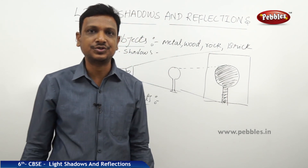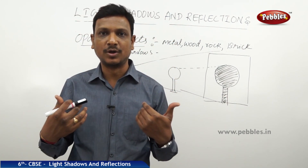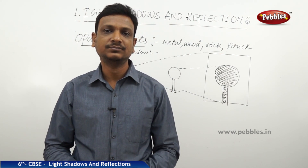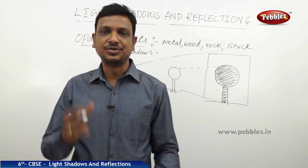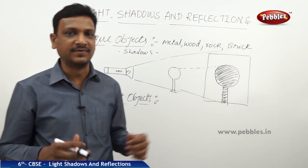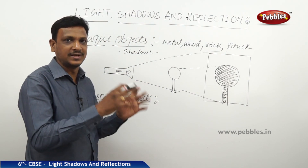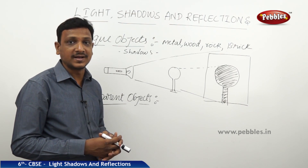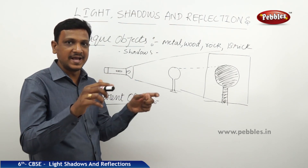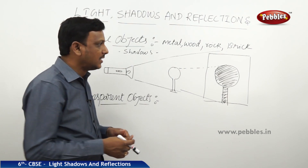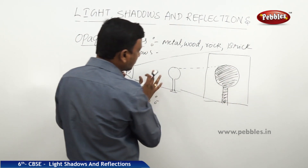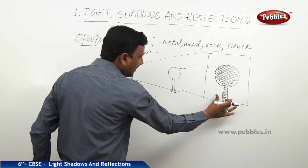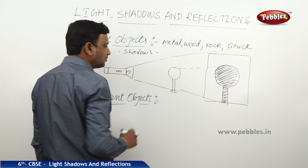If there is a light in front of you and you stand there, the light falls on your body. If you just look back, you can find your shadow. Shadow is nothing but the absence of light — where there is no light falling, that area is called a shadow. You can see the outline of the shadow because light falls on all the surrounding area except the obstructed part.